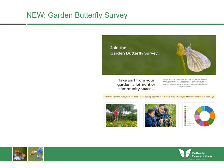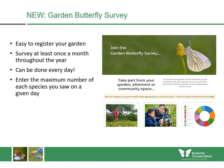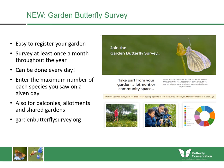We've recently relaunched the Garden Butterfly Survey and we'd love to get you involved — it's very easy to register your garden. You just need to do a survey once per month throughout the year, or even every single day if you wish, by entering the maximum number of each species you saw on a given day. It now embraces a wider variety of garden types including balconies, allotments, and shared gardens. You can find it at gardenbutterflySurvey.org.